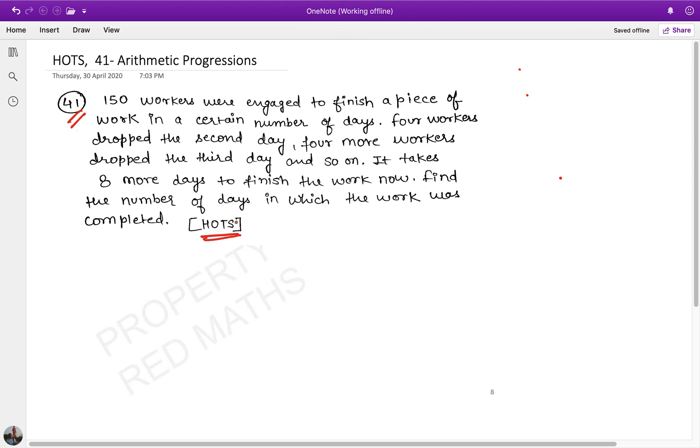The question states: 150 workers were engaged to finish a piece of work in a certain number of days. So these people will take some days to complete a task. Four workers dropped the second day, meaning 4 people left on the second day. Four more people left on the third day, and so on.